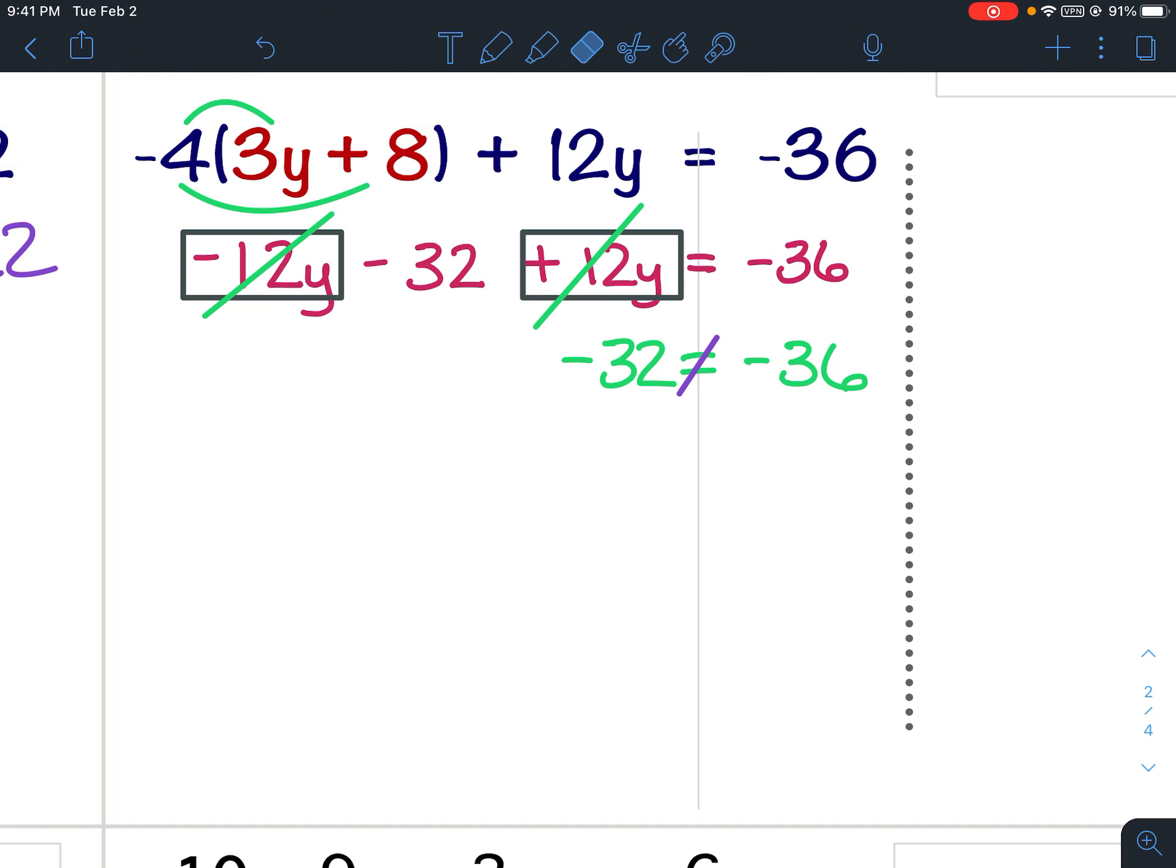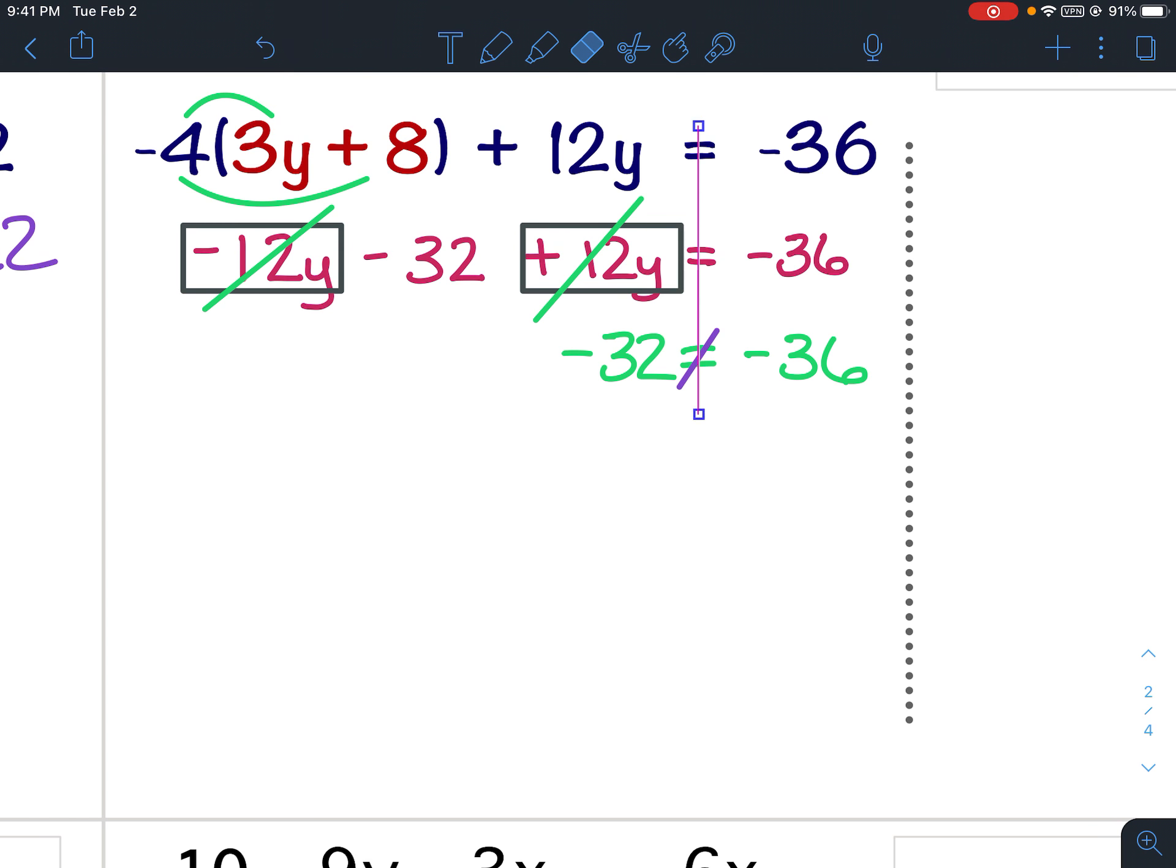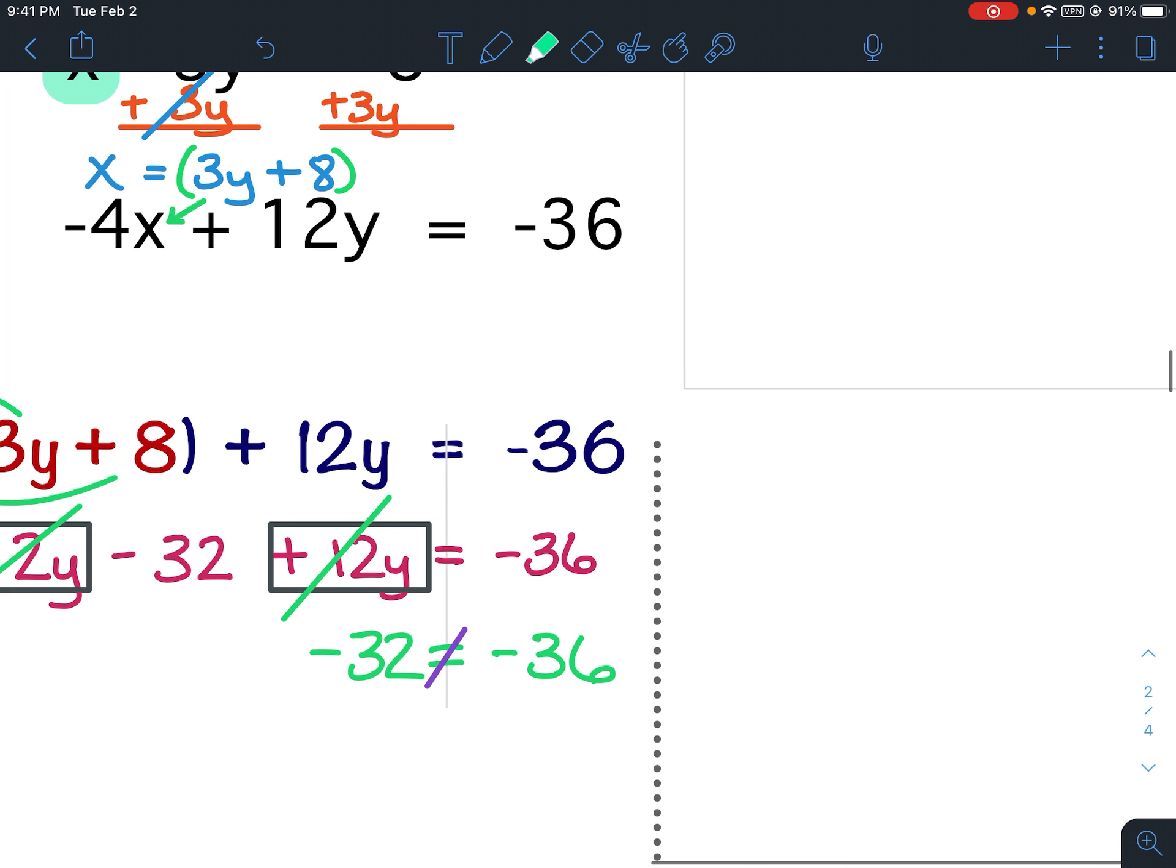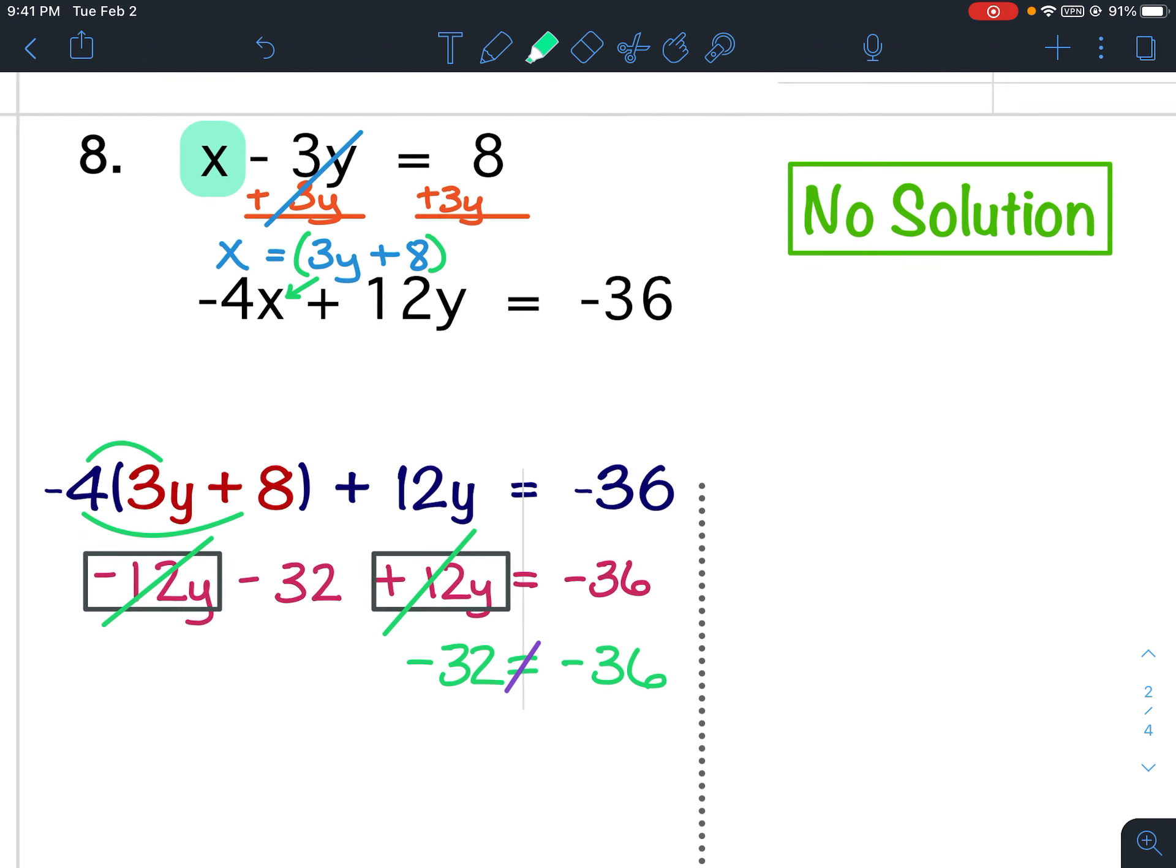In problem number 4, the two numbers were equal to one another, and that is why it was infinitely many solutions. However, for this problem, these two numbers right here are not equal to one another, making this a no solution answer.